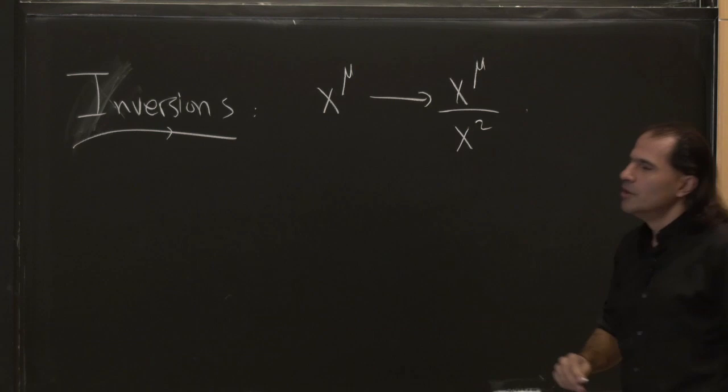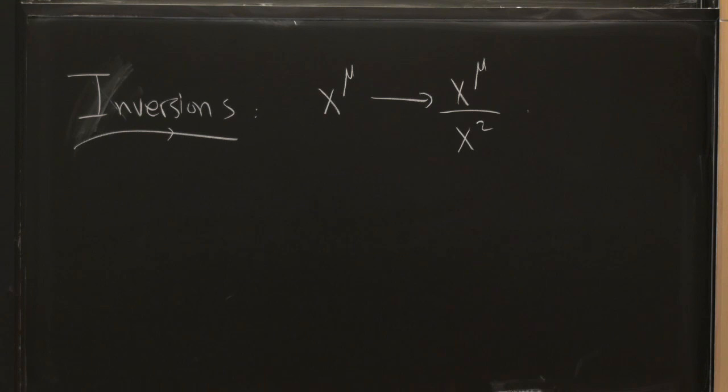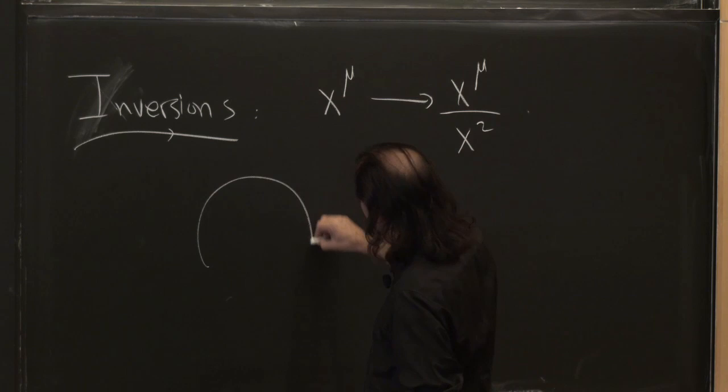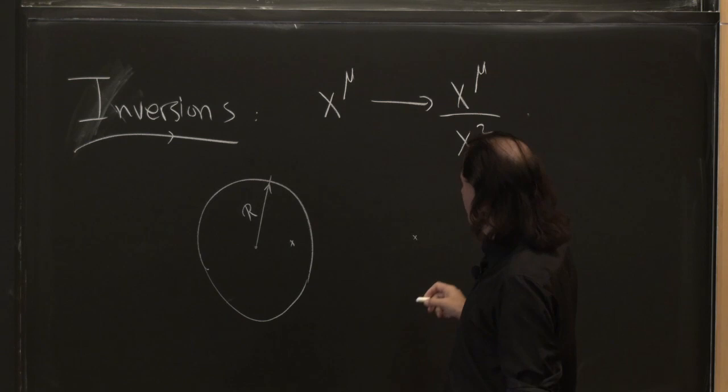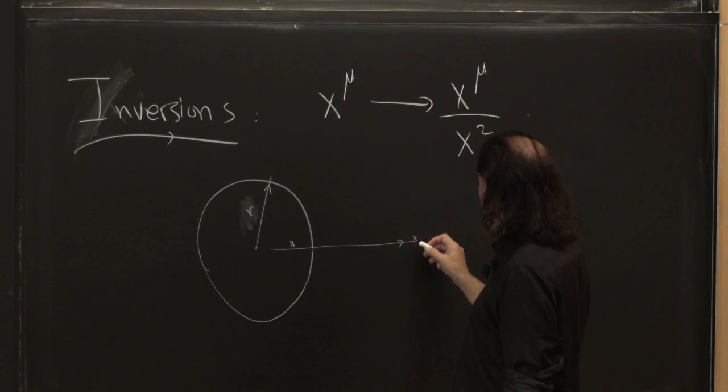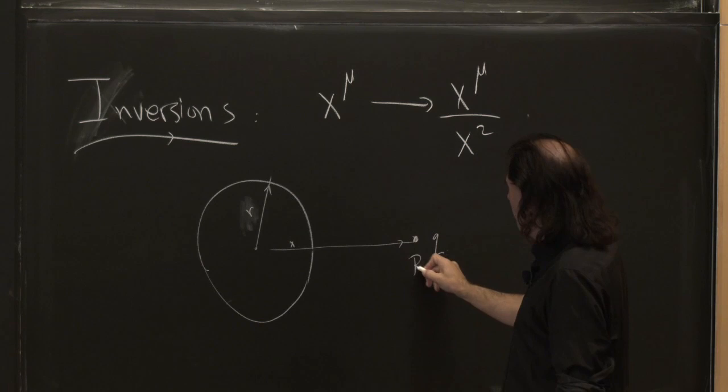It's surprising that there's an invariance under taking x-mu over x-squared. As I reminded you, you've probably run into this even if you haven't had any exposure to conformal field theory before — you probably ran into this when you solved for the problem of the electric field outside a conducting sphere. You know the way you're supposed to solve this problem.